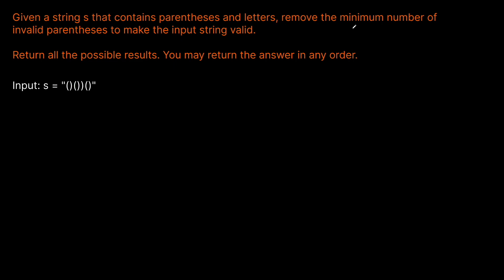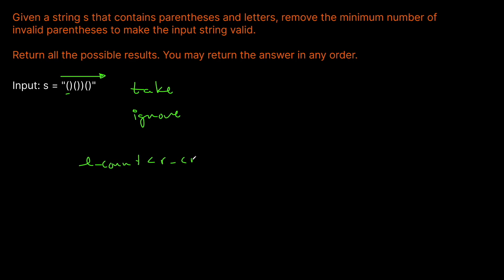We're going to solve this using a backtracking DFS. Starting at the beginning of the string and going left to right, at every iteration we make a decision of whether to take the current parenthesis or leave it. For other parenthesis problems, we know that if the left count is less than or equal to the right count, we're not allowed to take any right parenthesis because it would be invalid — no possible left parenthesis could close it.